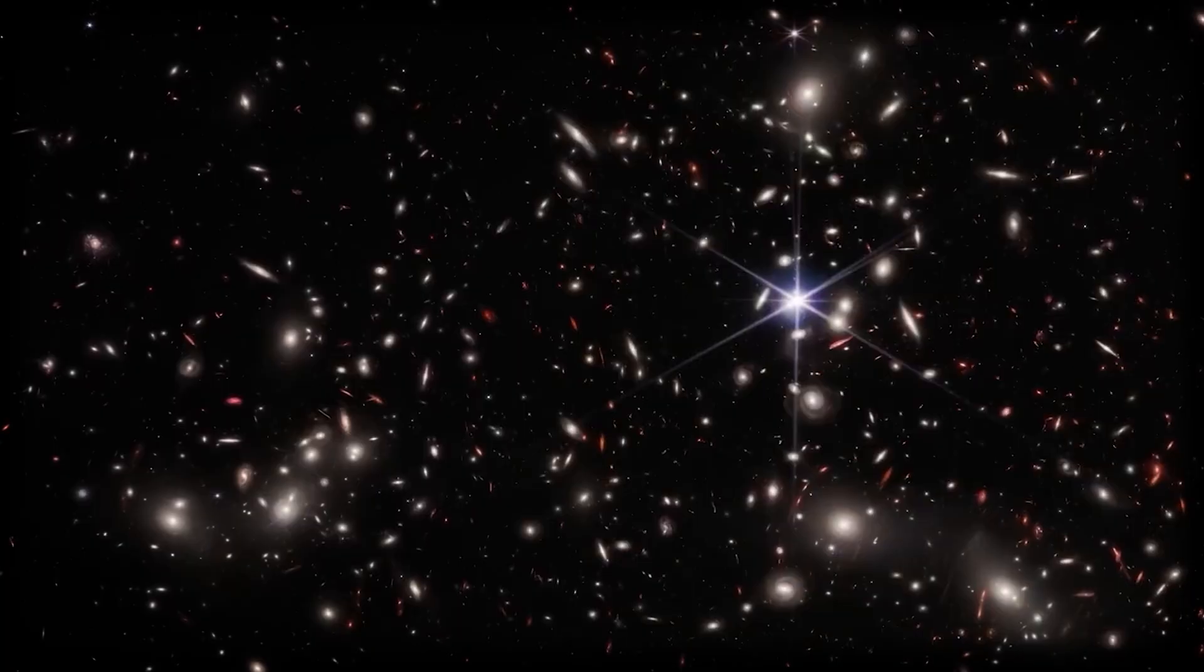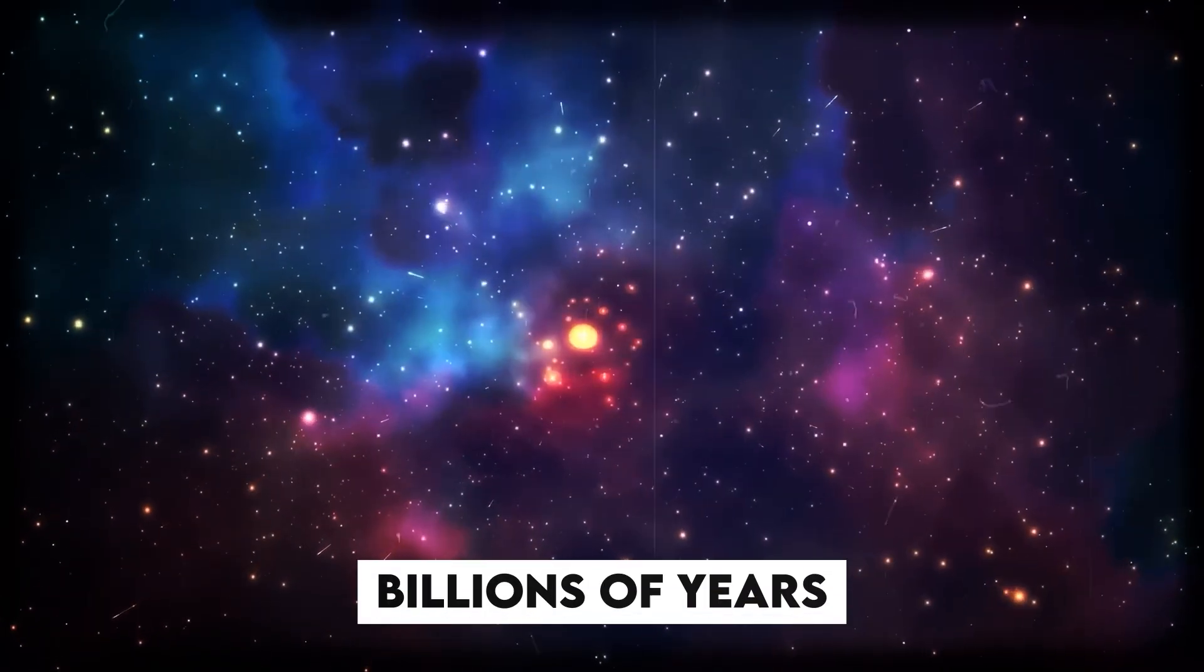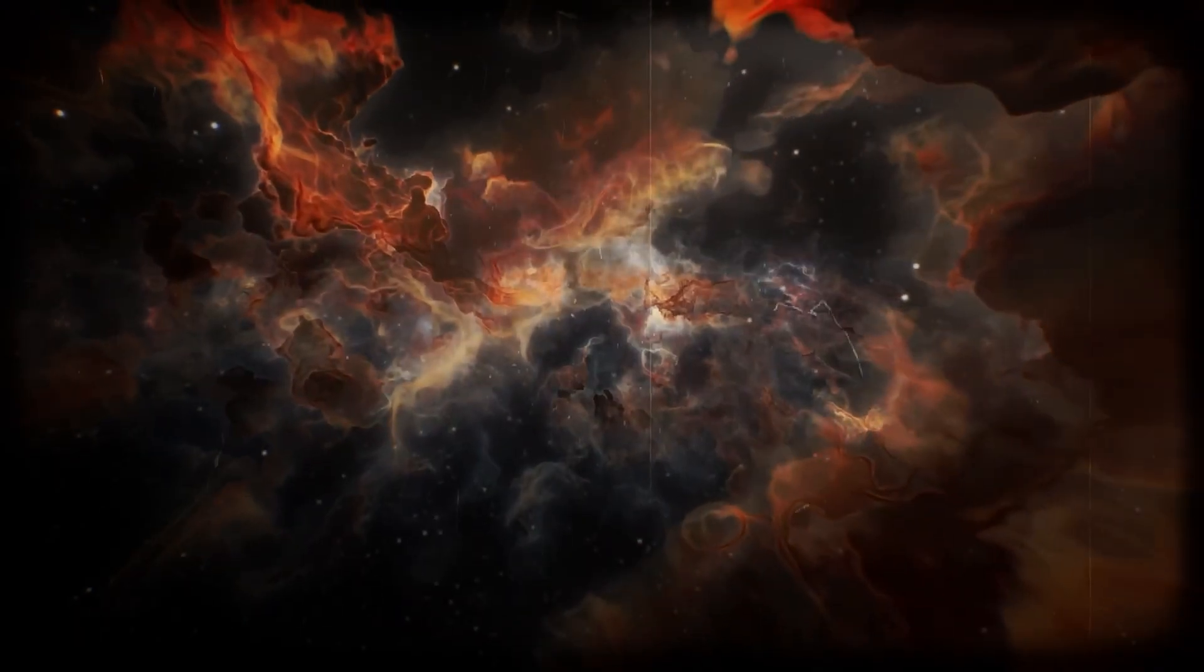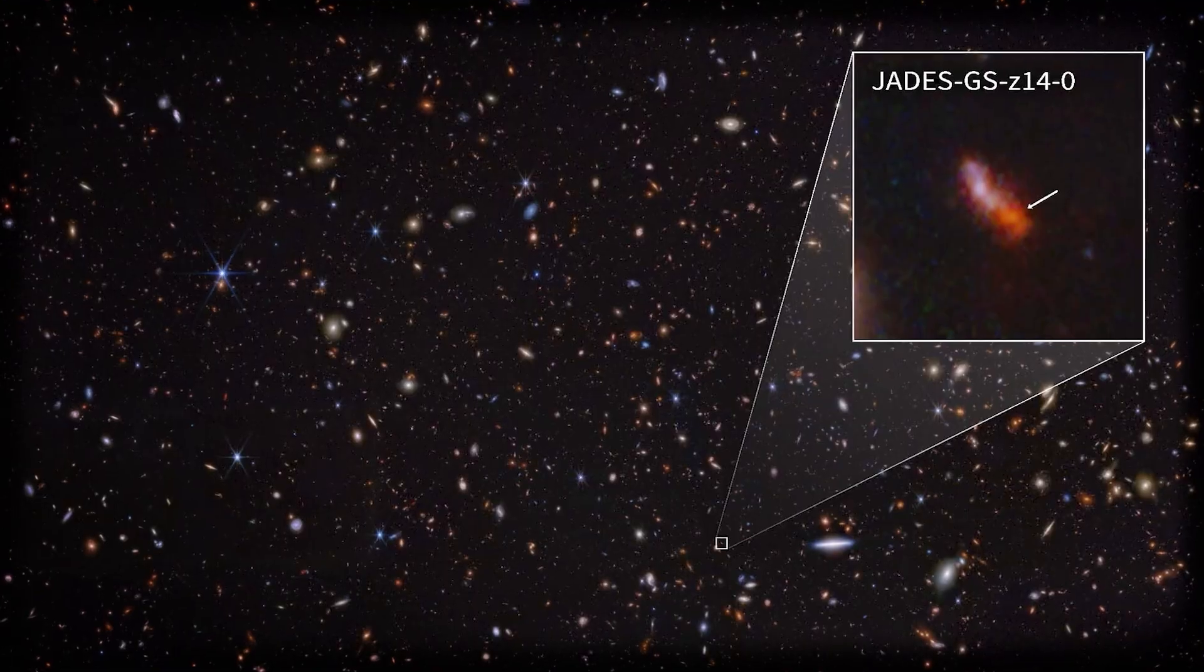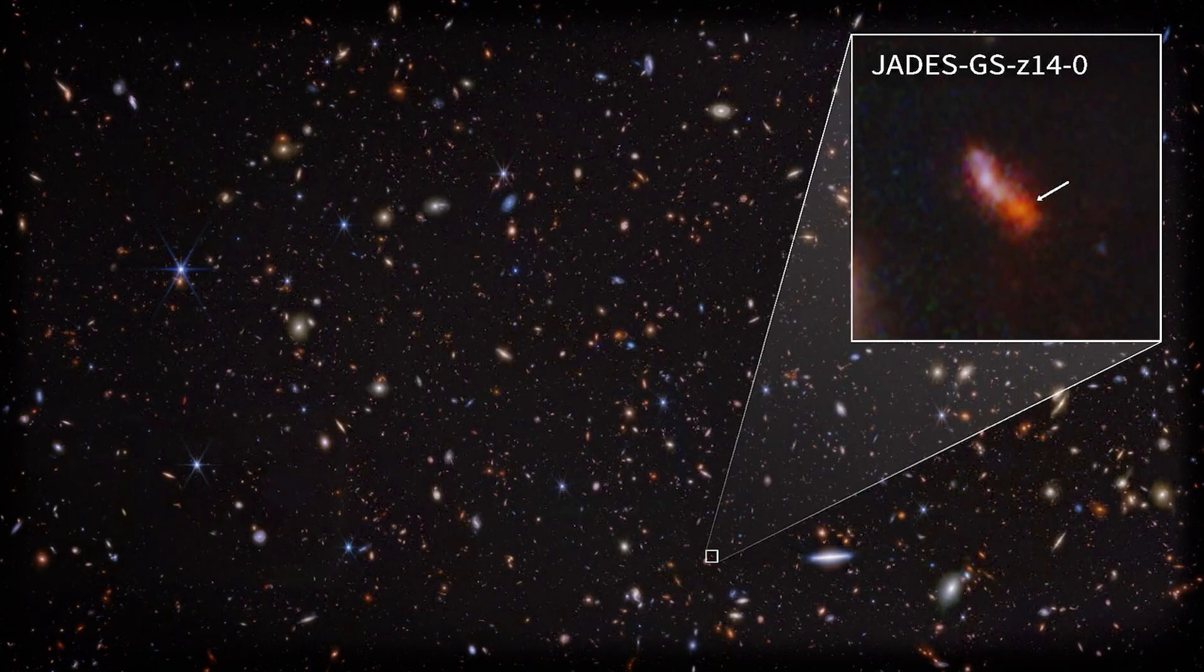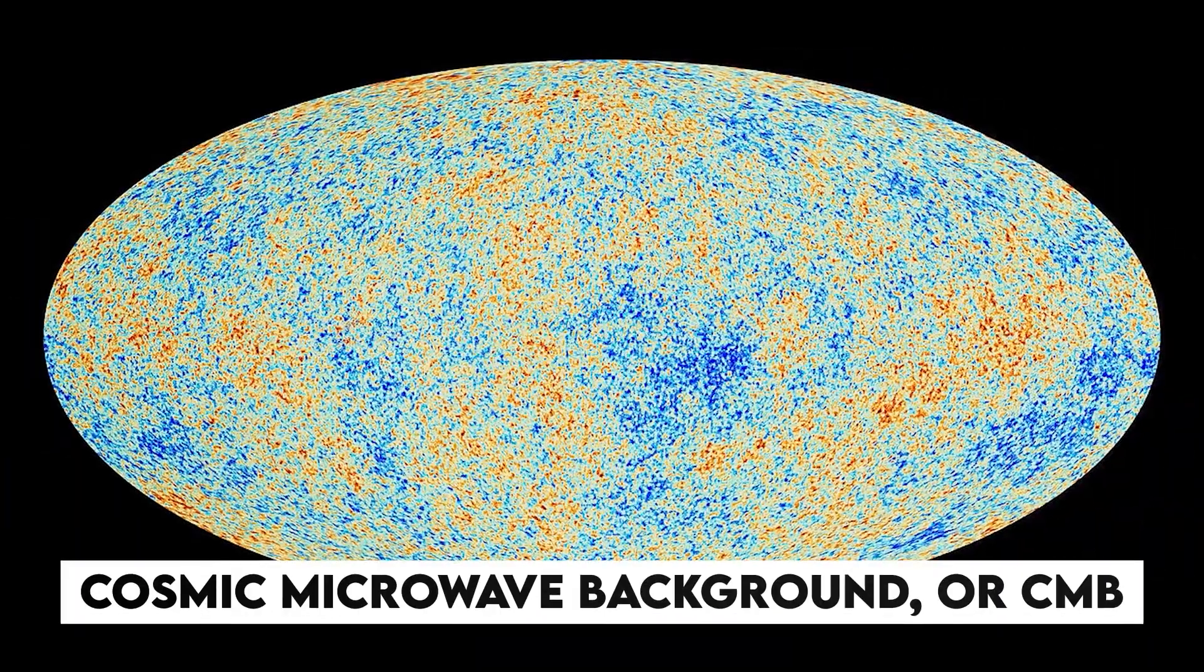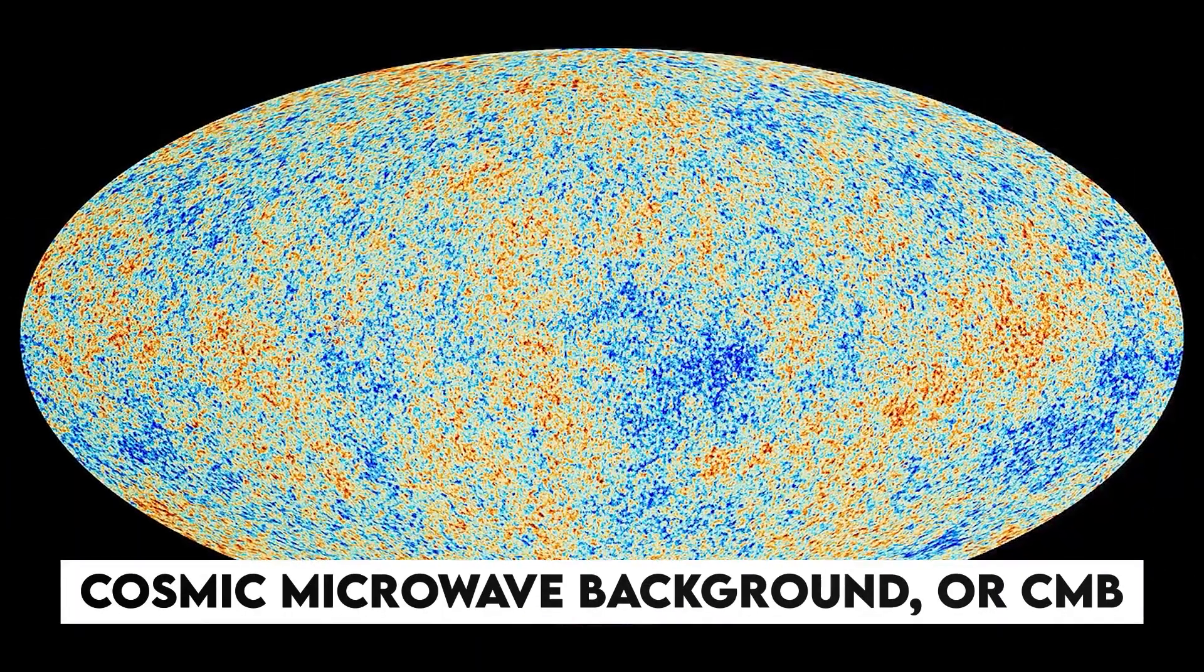But here's the twist. As the universe expanded over billions of years, that light would have stretched out, its wavelength getting longer and longer, until it became red-shifted into something we've been detecting for decades, the Cosmic Microwave Background, or CMB.